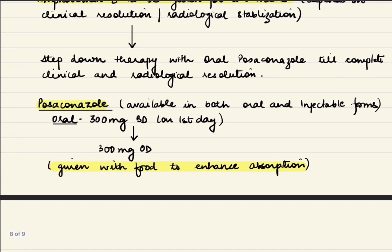Posaconazole is a broad-spectrum antifungal available in both oral and injectable forms. In oral form, give 300 mg BD on the first day, then 300 mg OD subsequently. It is given with food to enhance absorption.